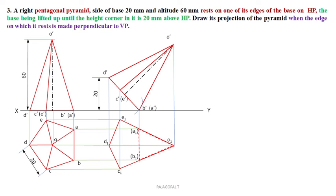So far we have discussed three pentagonal pyramids and two hexagonal pyramids, all with different conditions. If you are capable of understanding and identifying the differences between these five questions, you can solve any kind of pyramid problem, especially inclination with respect to HP. If you have any queries or doubts, post them in the comment box. Your comments are always welcome.